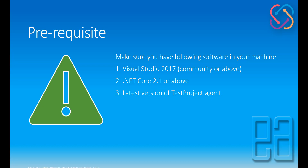If you have Visual Studio 2017 latest version and do the upgrade to 15.9.2 or 15.9.3, you'll automatically get .NET Core 2.1. So make sure you do that update on your machine — that way you'll get both of them together in one single bundle.